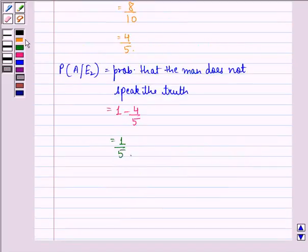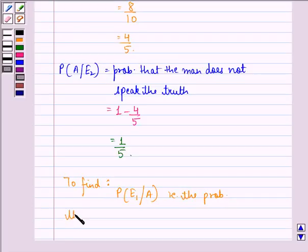Now, we have to find probability E1 upon A, that is when A is given, that is the probability that there is 5 on the die.